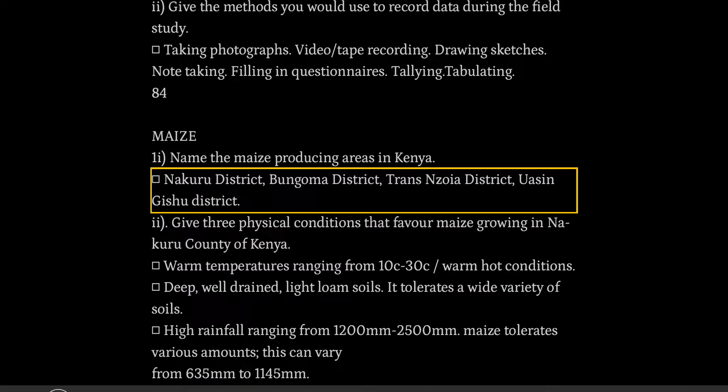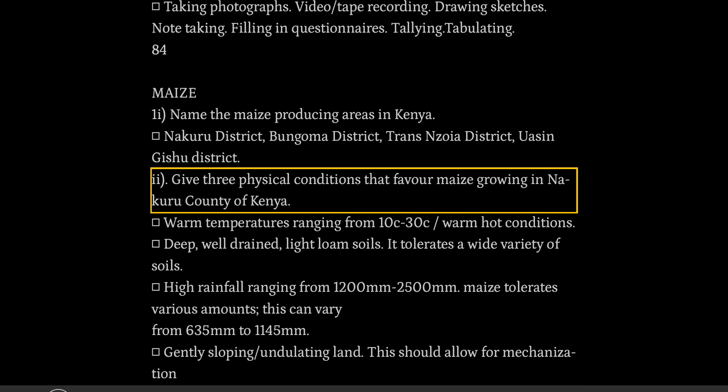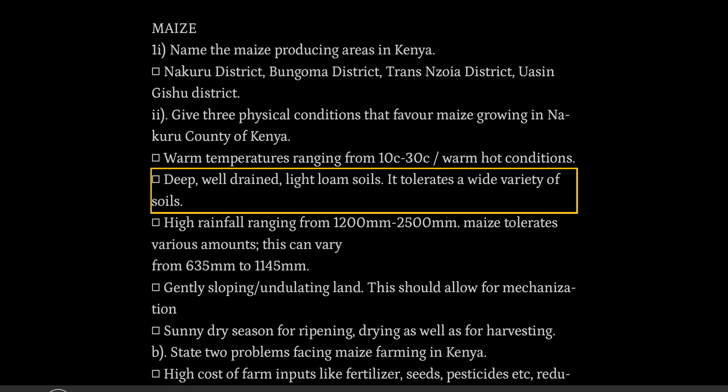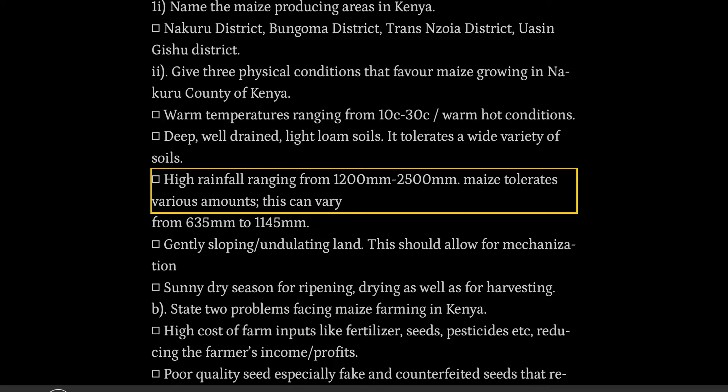Give three physical conditions that favor maize growing in Nakuru county of Kenya. Warm temperatures ranging from 10°C to 30°C. Deep, well-drained, light loam soils. It tolerates a wide variety of soils. High rainfall ranging from 1200mm to 2500mm.